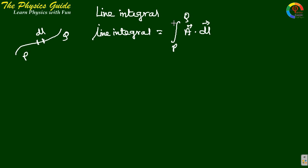Today I am going to discuss line integral. Let vector A be along a path, and the small element is dl. The line integral equals the integration of the scalar product (dot product) of vector A and dl from point P to Q. This gives the line integral.